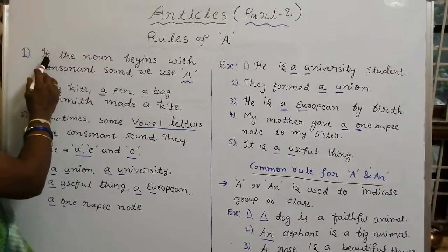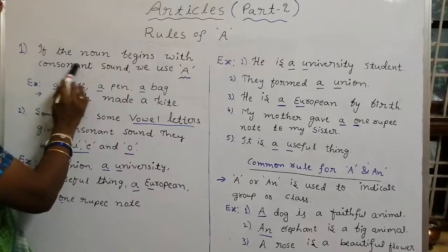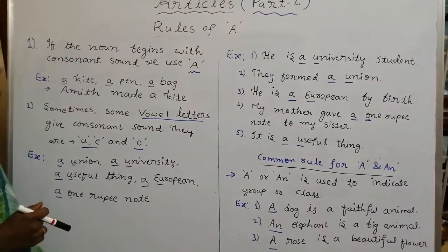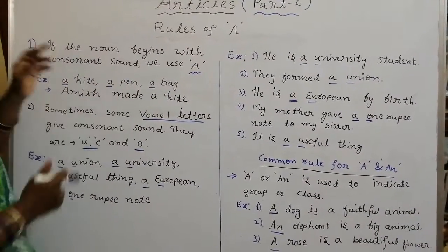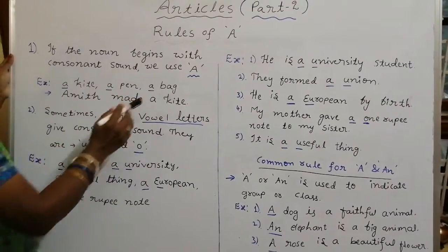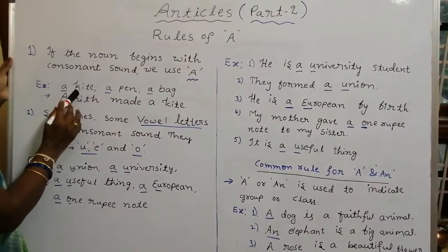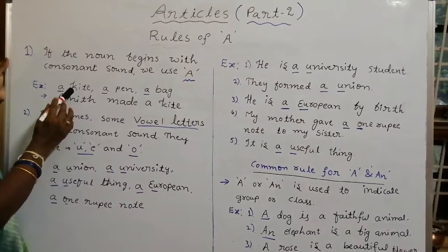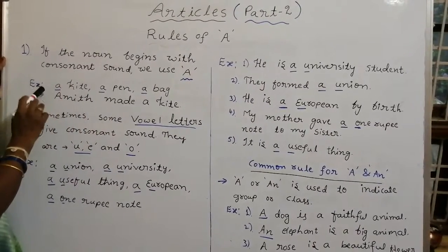Okay, first rule: if the noun begins with a consonant sound, we use A. I gave some examples here — a kite, a pen, a bag. Here you see 'kite' — what is that sound? 'Ka.' That is a consonant sound. That's why we have to use A.